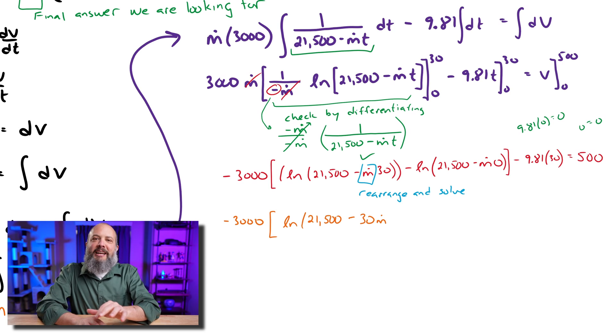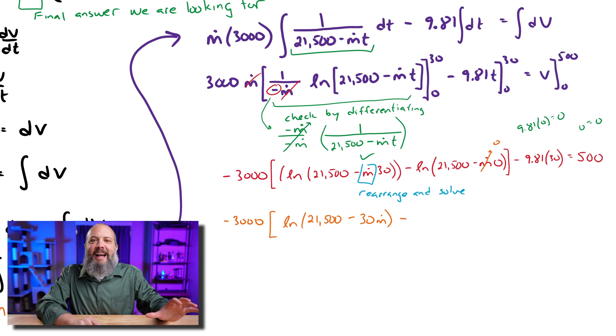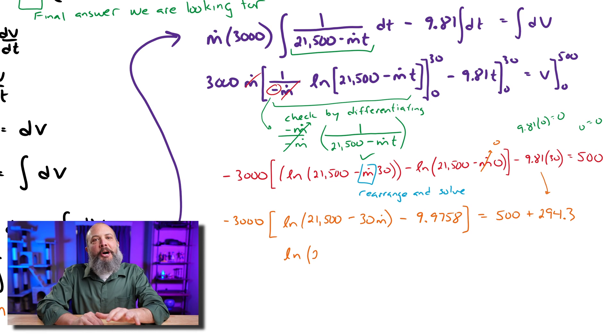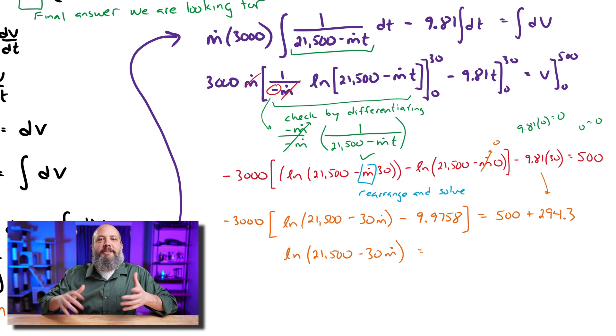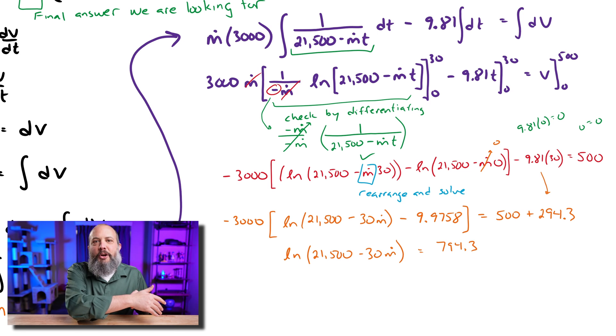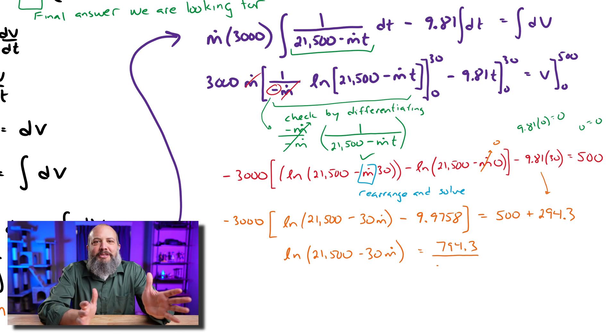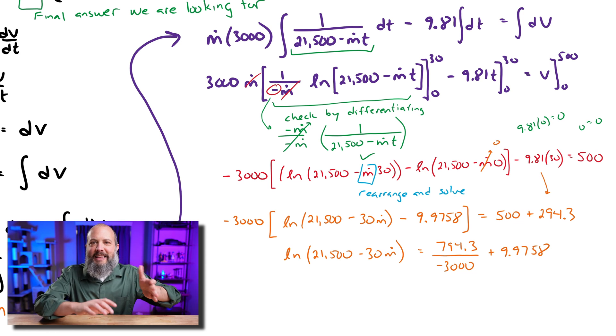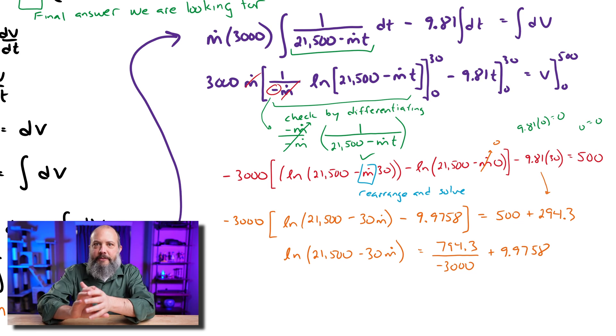So I'm going to move the 9.81 times 30 over to the right-hand side and combine it with the 500. I'll take my natural log of 21,500 to convert that into just a regular number. So the 3000 is outside the parentheses. So I can just divide it over to the right-hand side. Once the 3000 is gone, I can take the 9.97 and add that over to the other side and get the natural log by itself on the left-hand side.